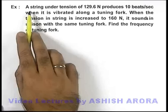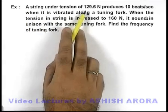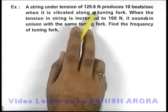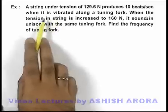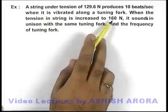In this example we are given that a string under a tension of 129.6 Newton produces 10 beats per second when it is vibrated along a tuning fork.